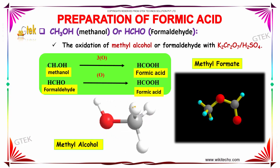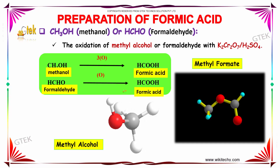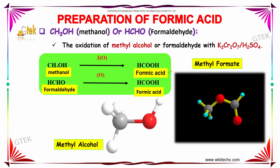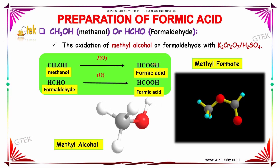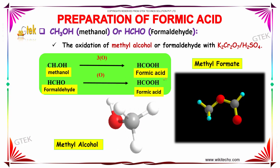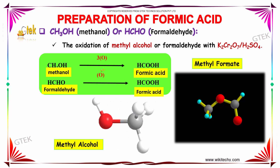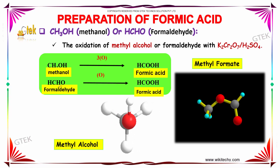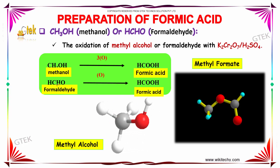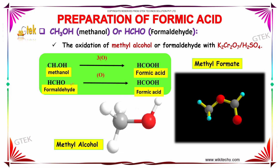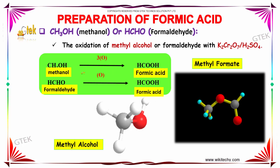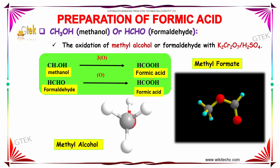The oxidation of methyl alcohol or formaldehyde with K₂Cr₂O₇ in the presence of sulfuric acid produces formic acid. In this reaction we can clearly see that methanol and formaldehyde are oxidized in the presence of oxygen to form formic acid.